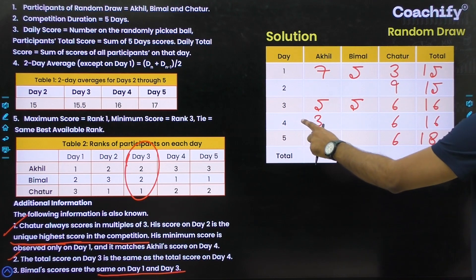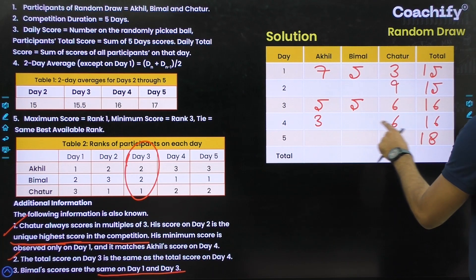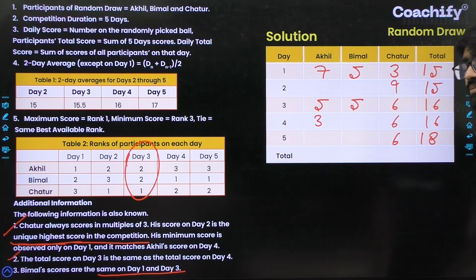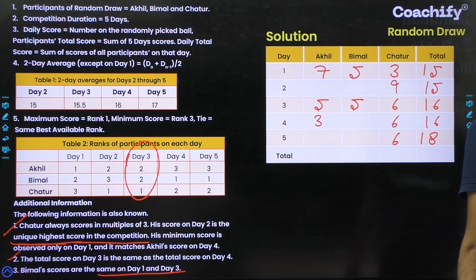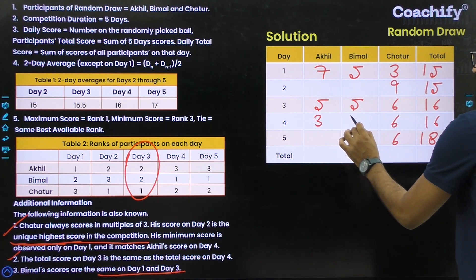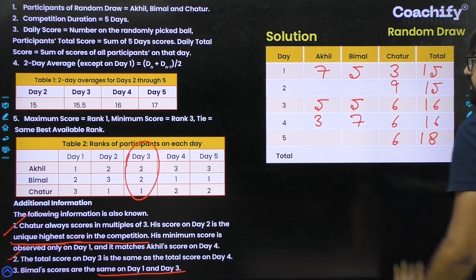For day 4: Chatur scores 6 and Akhil scores 3 (matching Chatur's day 1 minimum per the clue). That gives 6 + 3 = 9, so the total for day 4 is 16, meaning Bimal's score on day 4 is 7.